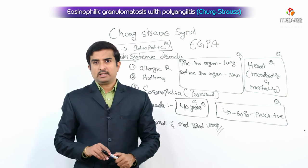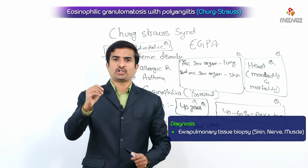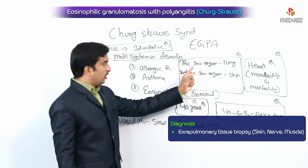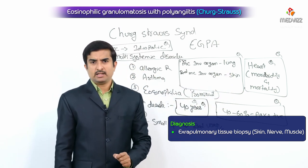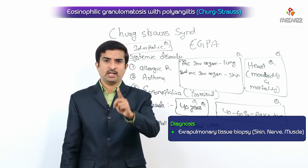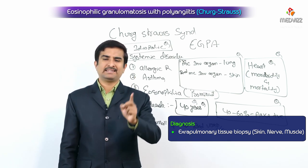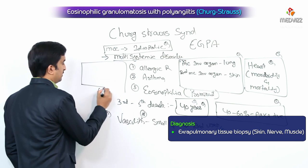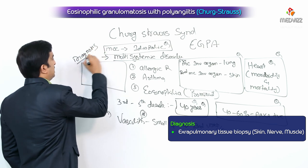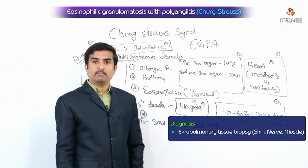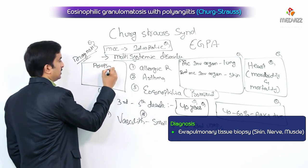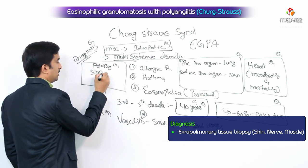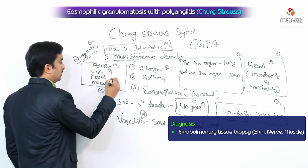Regarding diagnosis, it is usually confirmed by biopsy of extrapulmonary tissue. Lung biopsy is usually uncommon and often not performed in Churg-Strauss syndrome. Even though the most common organ involved is the lung, do not be confused by lung biopsy as an option. The most common biopsy is of extrapulmonary tissue, which includes skin, nerve, and muscle.